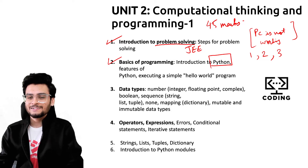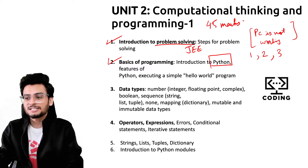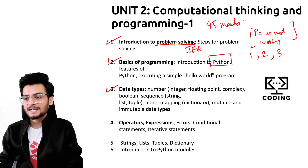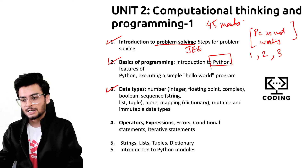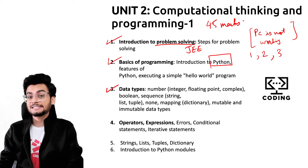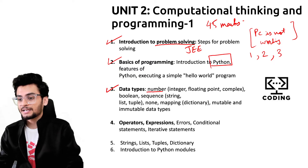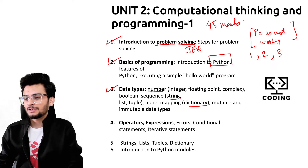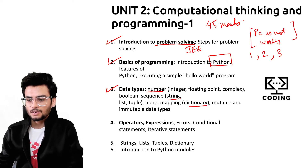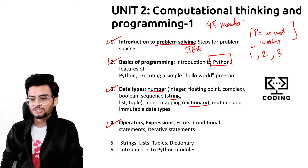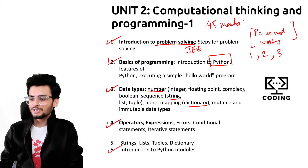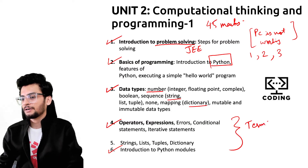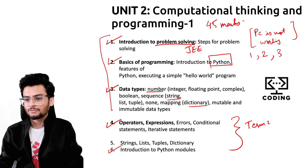Next is basics of programming. We will study Python coding language, starting with simple programs where you print things. After that, you will understand various data types like numbers, strings (alphabets), dictionaries, and lists. Apart from that, we will also understand operators, expressions, and an introduction to Python modules. This part will be in Term 1, while modules may be asked in Term 2.